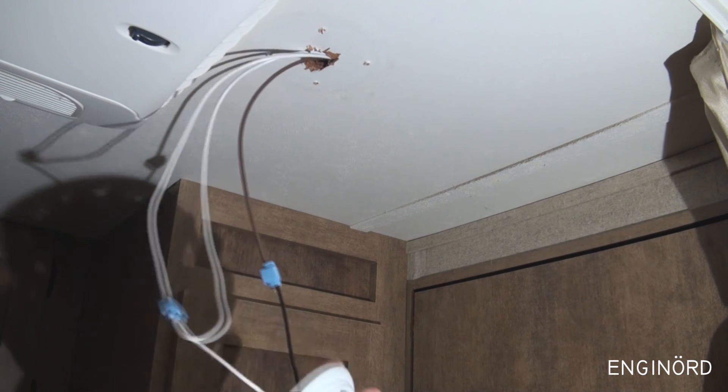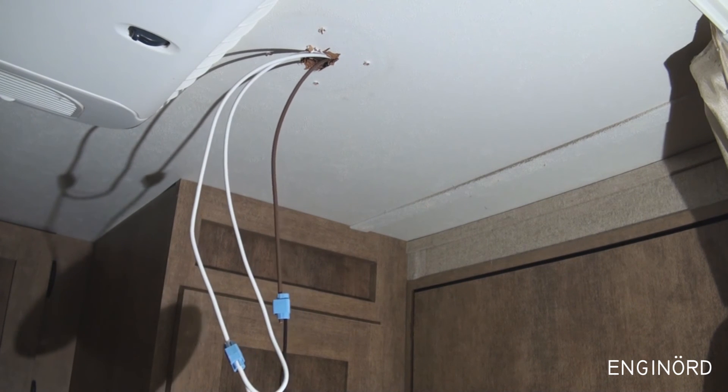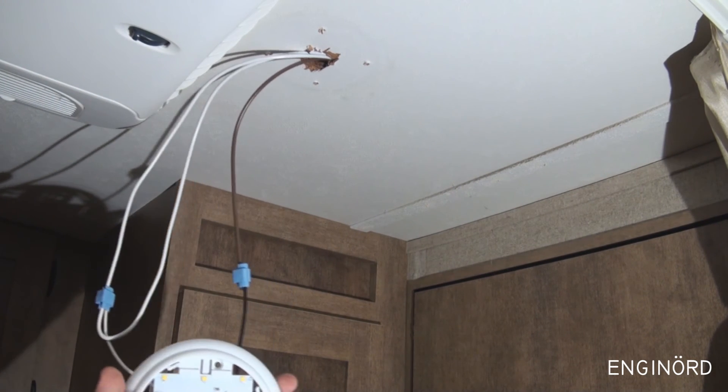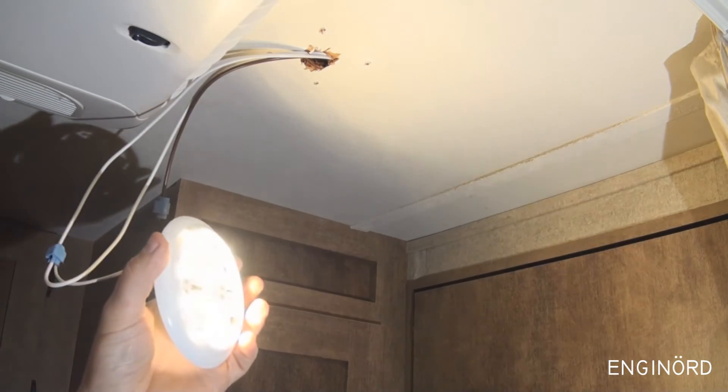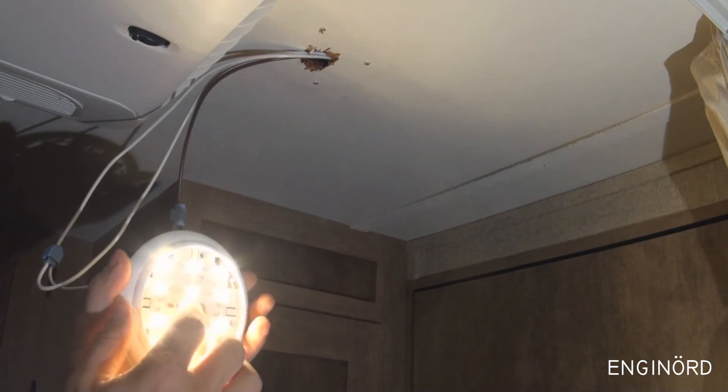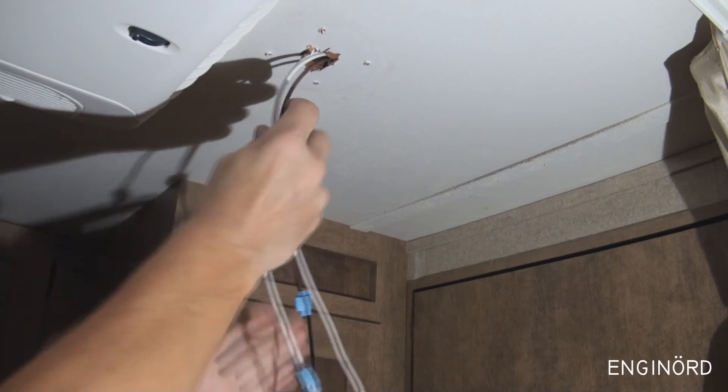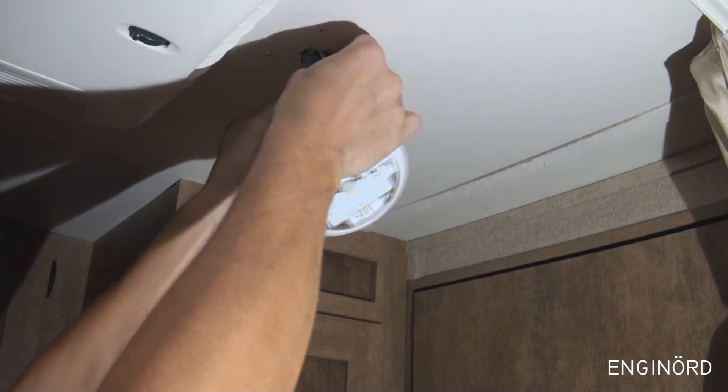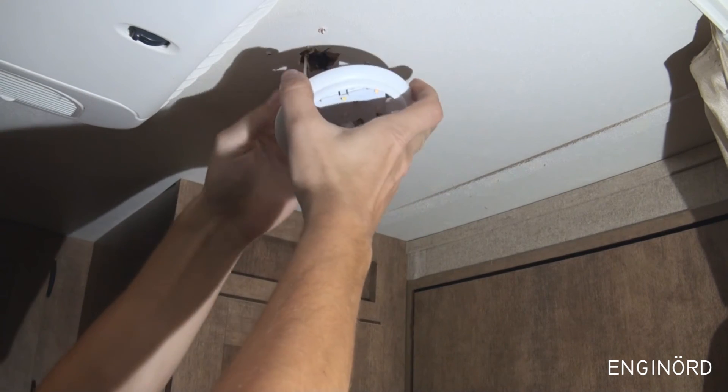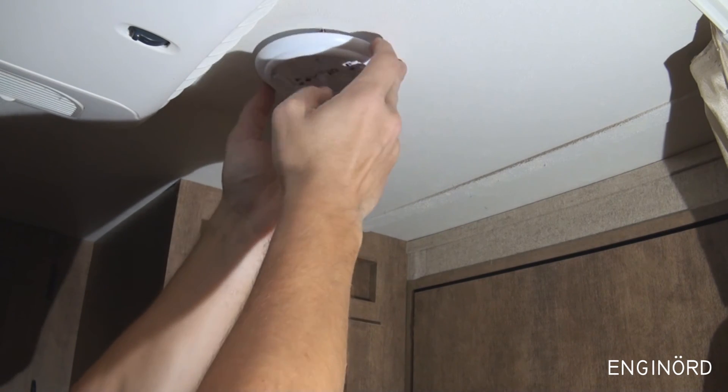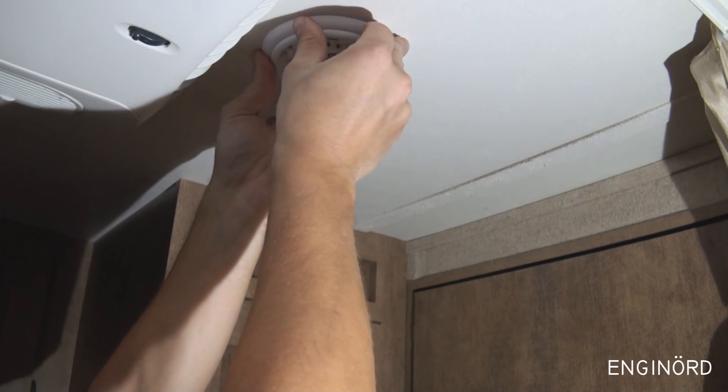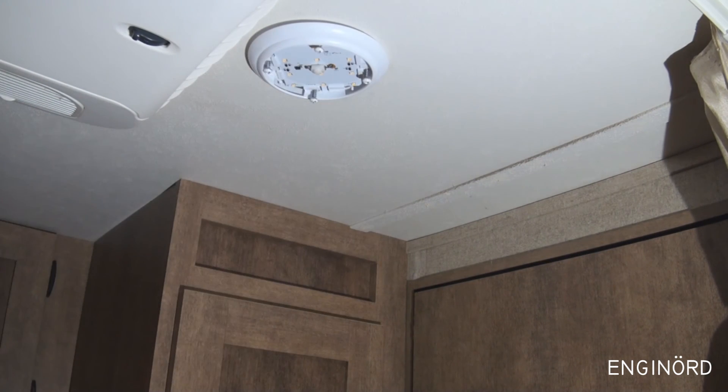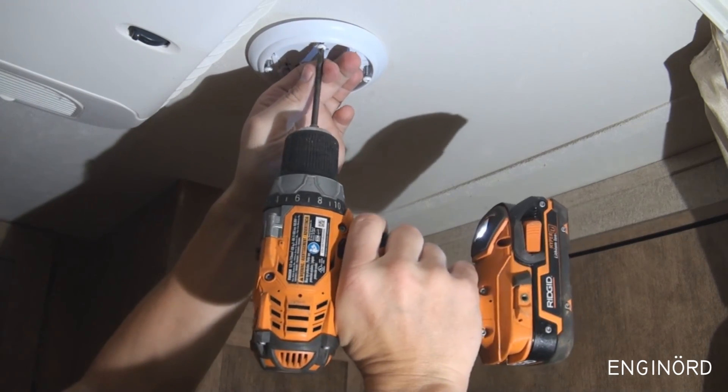Before we put it back on I'm just going to turn the lights on. And those lights are on, this one has the switch so that one is on too. So now what we can do is tuck the wires back into the ceiling and orient it and then install the screws. So all the screw holes are lined up perfectly so we just need to drive them in.